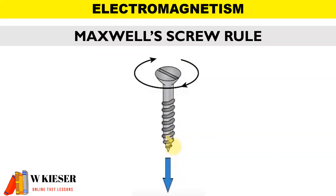For Maxwell's screw rule, as we tighten the screw in a clockwise direction, the downward movement would be the current flow and the screw would be turning in a clockwise direction, indicating the direction of the magnetic field.